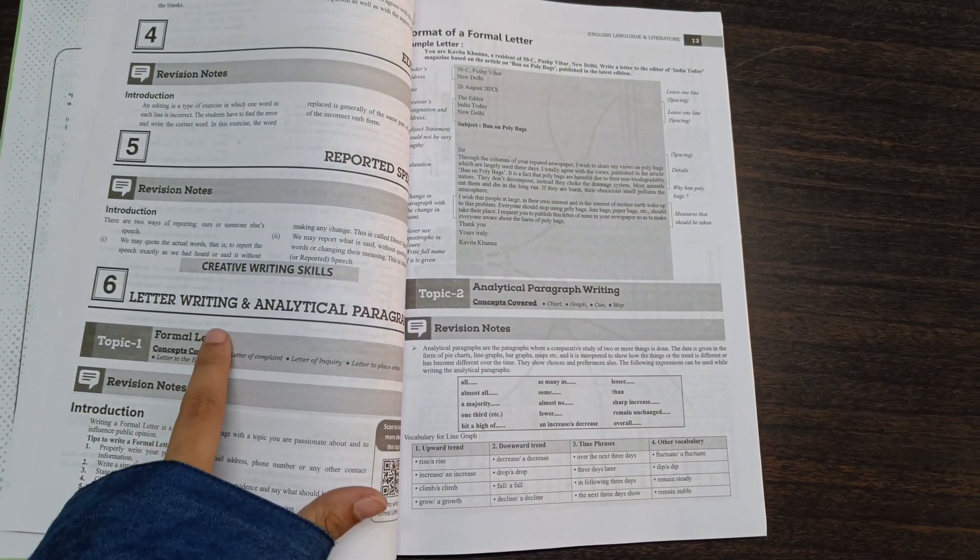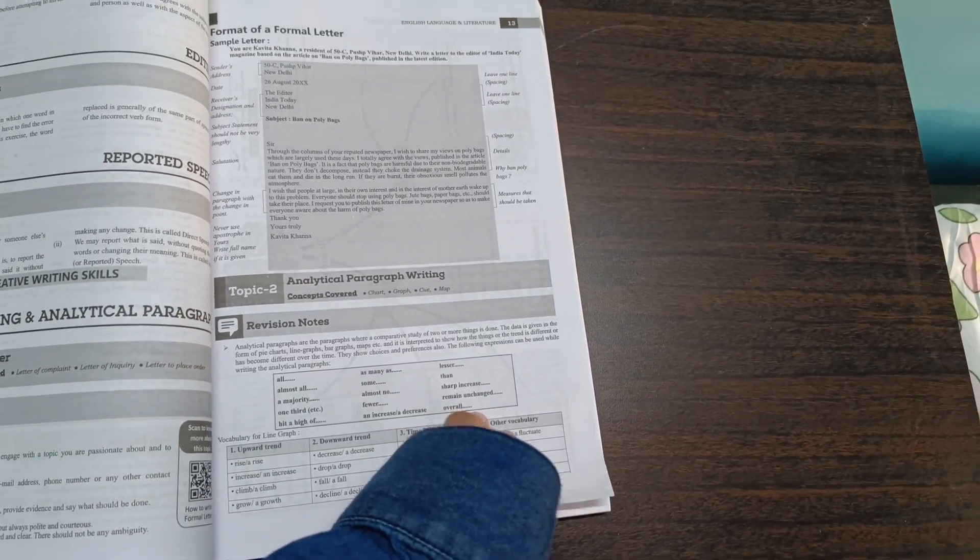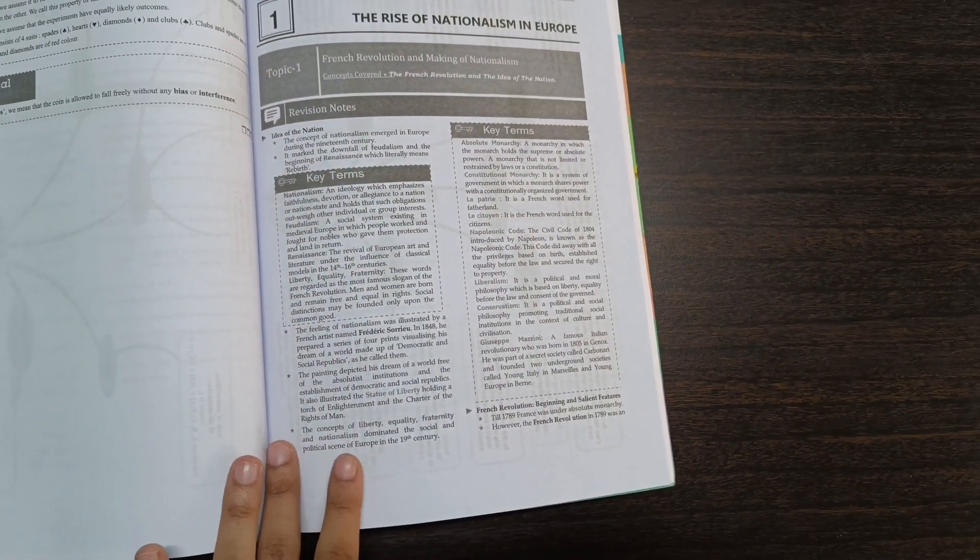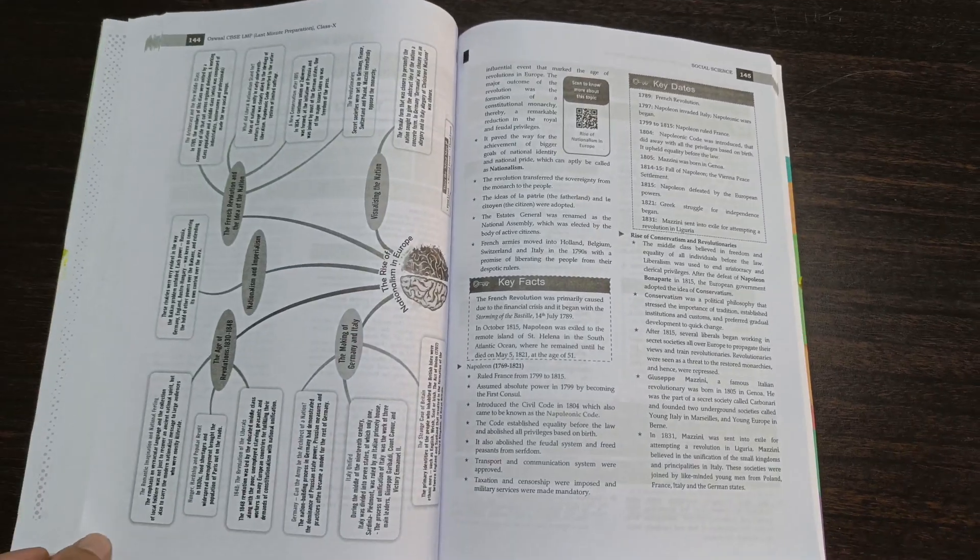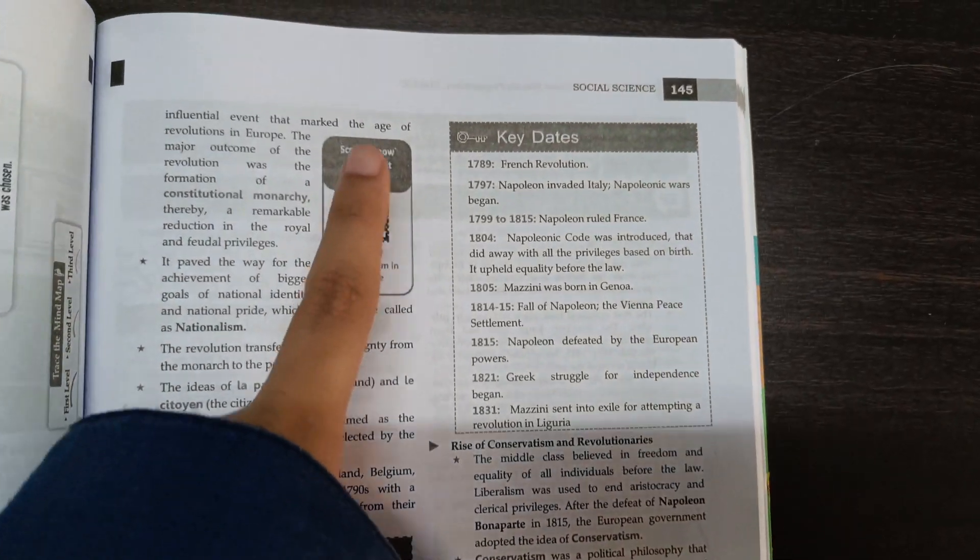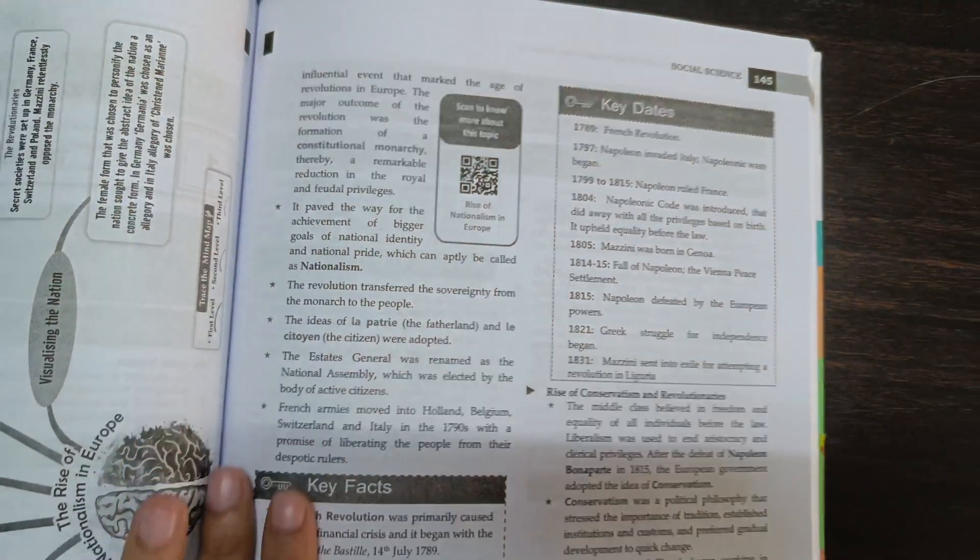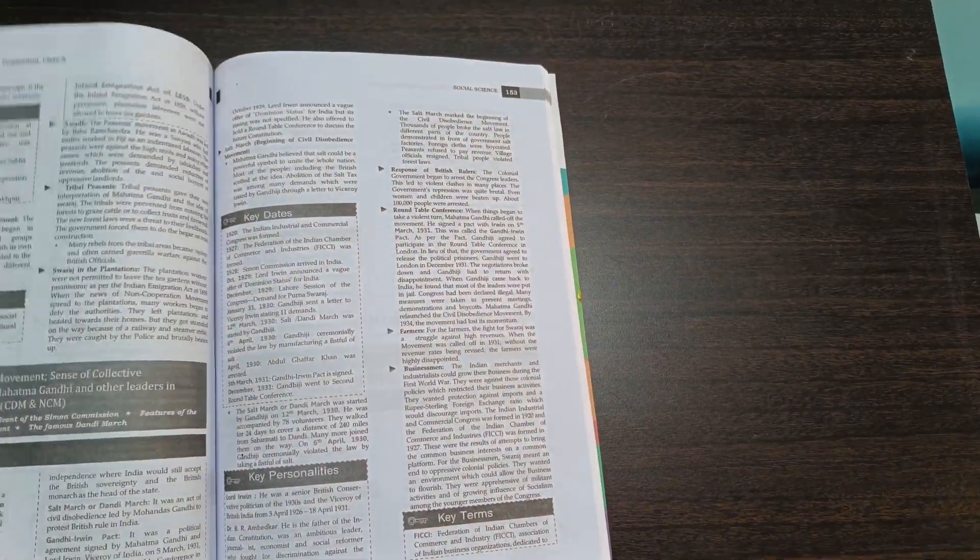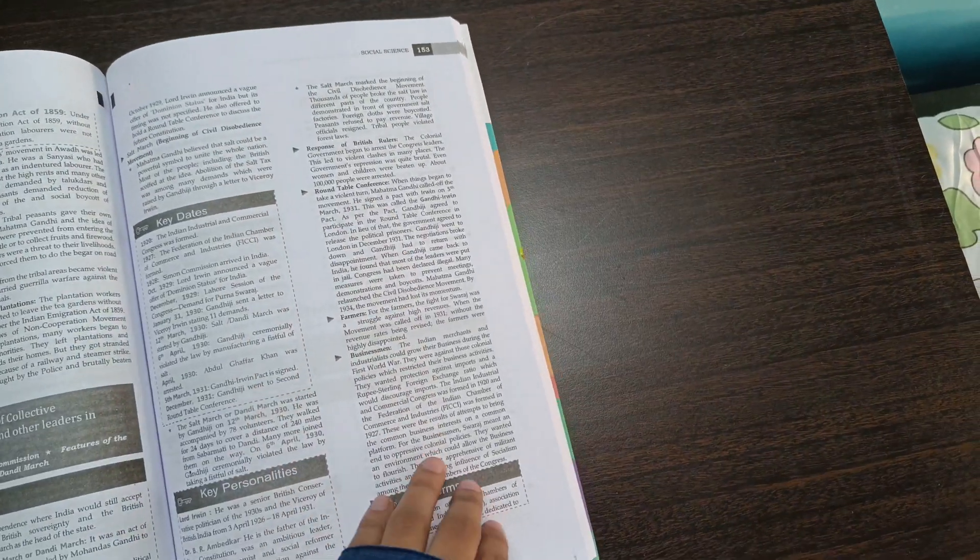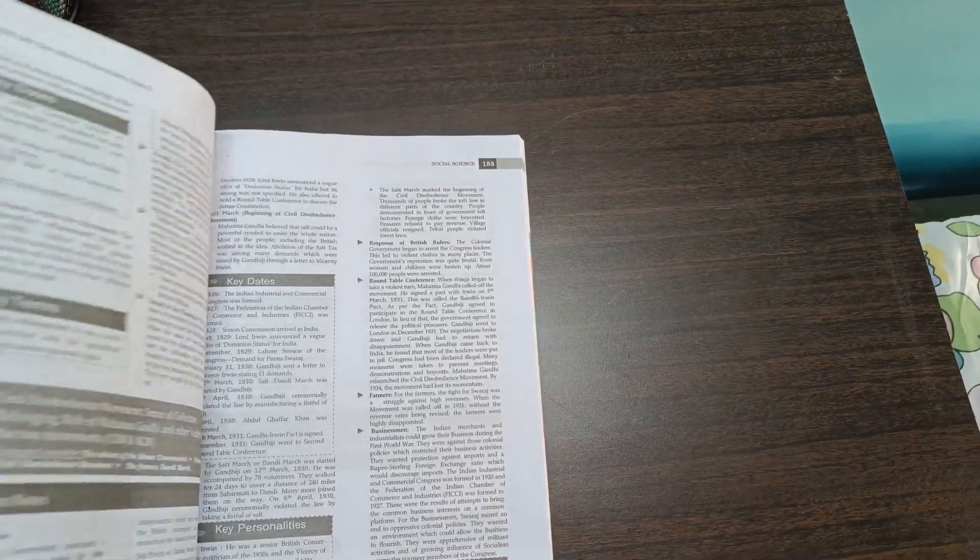The same pattern continues for subjects like social science, science, and maths. This book is a complete package for your last minute preparation. These are the notes of the first chapter of history. Here you can see we have key terms, key dates because we might not have enough time to look after the NCERT again and again. We also have some key facts and this barcode leads to a video for visual learning. This book is going to save us a lot of time because all topics are very concisely but efficiently mentioned. If you want to buy this book, make sure you buy it from the link in the description box for a discounted price as it's available at flat 75% off today.